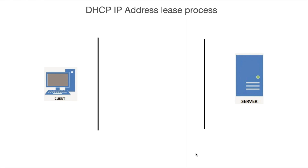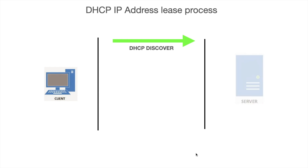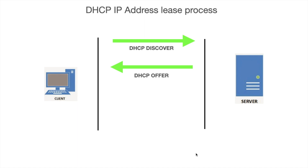Whenever you start up the client machine, it sends a broadcast packet to discover the DHCP server. This is the Discover step. Once that packet is received by the DHCP server, the DHCP server sends back a packet offering an IP address to the client machine. This is the Offer step.